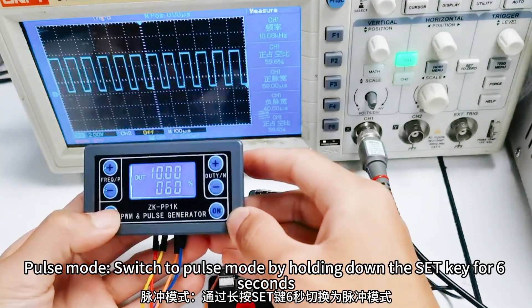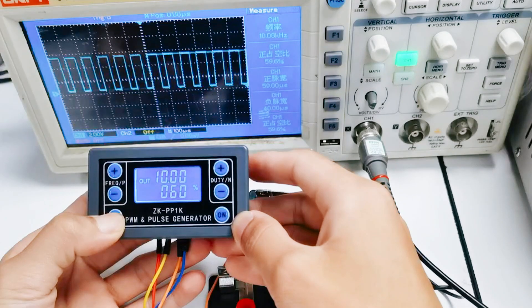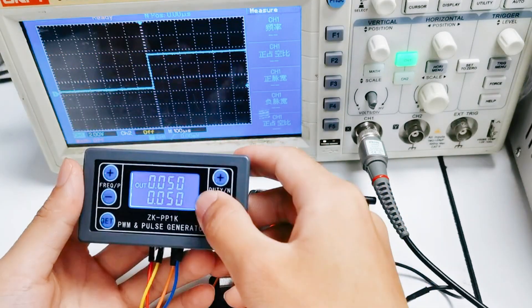Pause mode: switch to pause mode by holding down the SET key for 6 seconds. Percent disappear. This is pause mode.